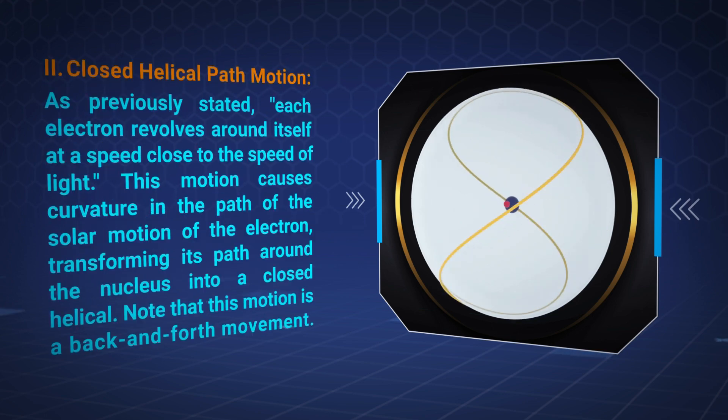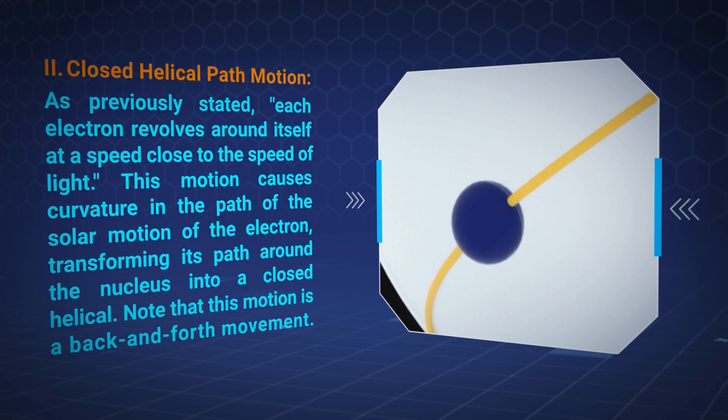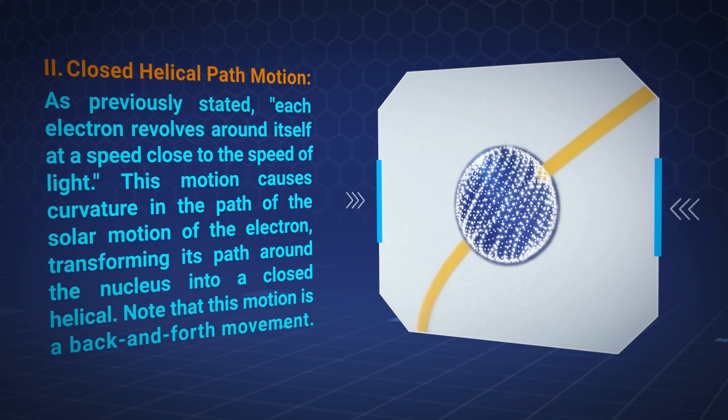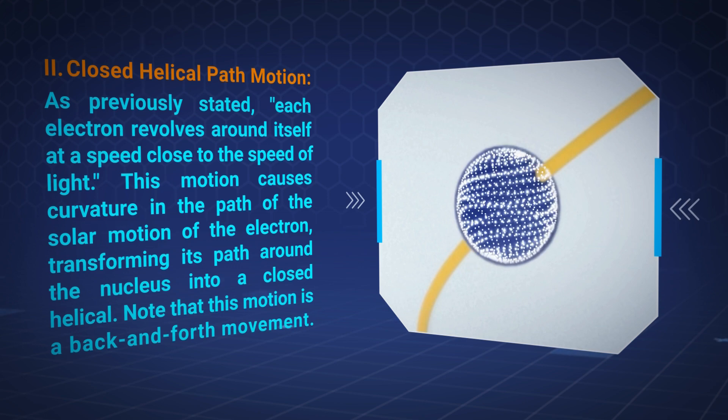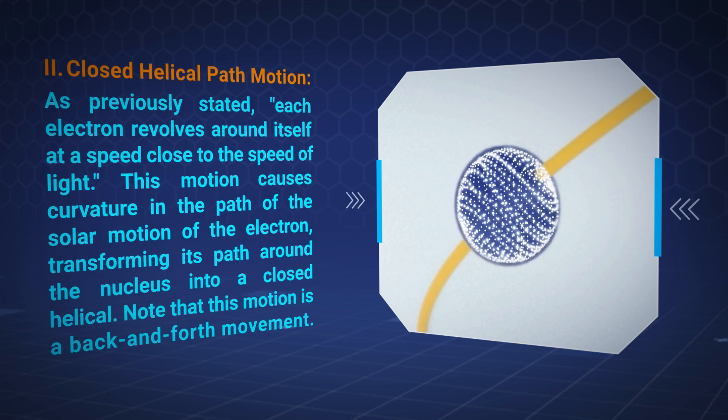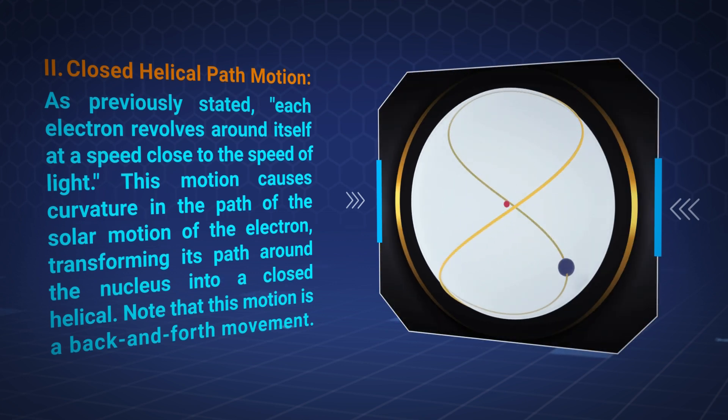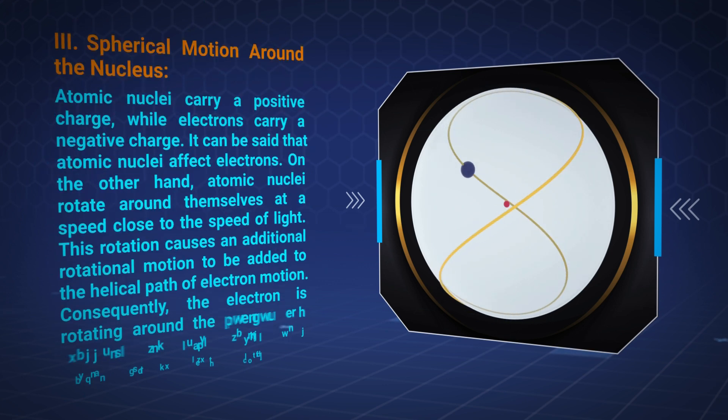Closed helical path motion: As previously stated, each electron revolves around itself at a speed close to the speed of light. This motion causes curvature in the path of the solar motion of the electron, transforming its path around the nucleus into a closed helical. Note that this motion is a back and forth movement.